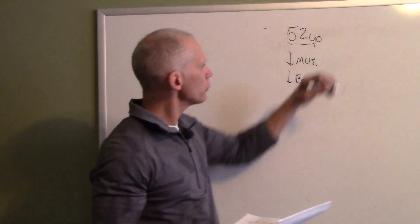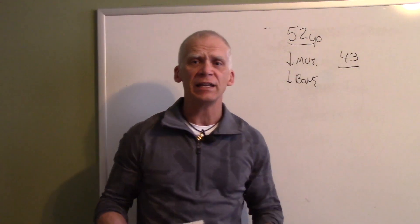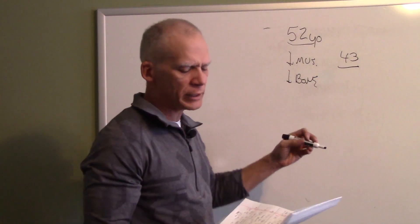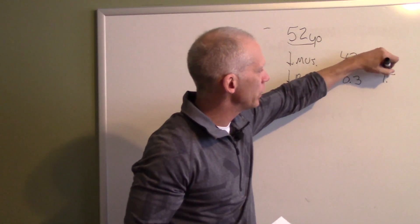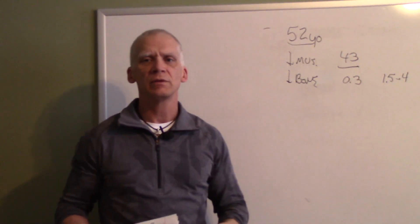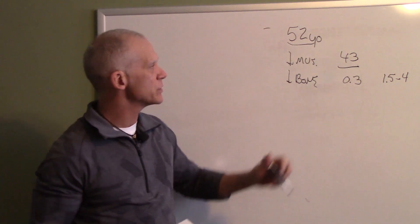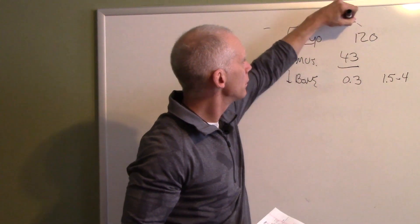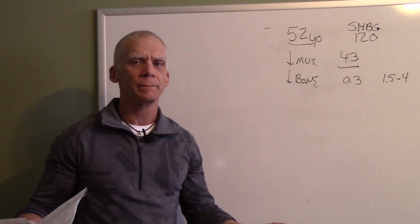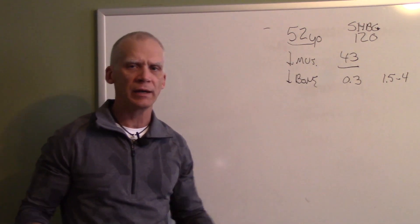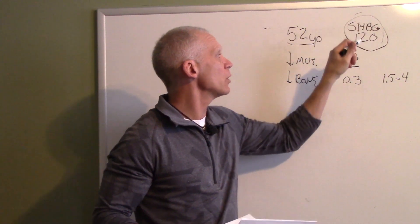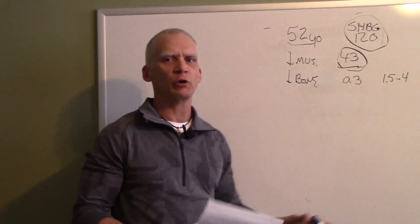But when she came, her total testosterone was 43. That's on that scale of 6 to 82. So most physicians are going to look at that and say, hey, that's great. You don't need anything. Well, when we looked at her free testosterone, it was 0.3. And remember, I like it between 1.5 and essentially 4. So she was really substantially low on her free testosterone. The reason for that is her sex hormone binding globulin was 120. Guess what that was from? It was from the oral estrogen. That's what jacked up her sex hormone binding globulin. So she was binding up all this testosterone. The other thing is sex hormone binding globulin holds on to testosterone longer, so it makes it look like you have a lot more than what you're actually producing.